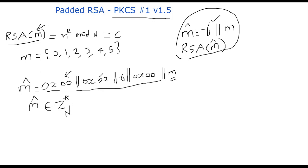This 0x02 is a constant. And R is a random number chosen in such a way that the whole thing in terms of the number of bits of m cap is same as the number of bits of the public modulus n.